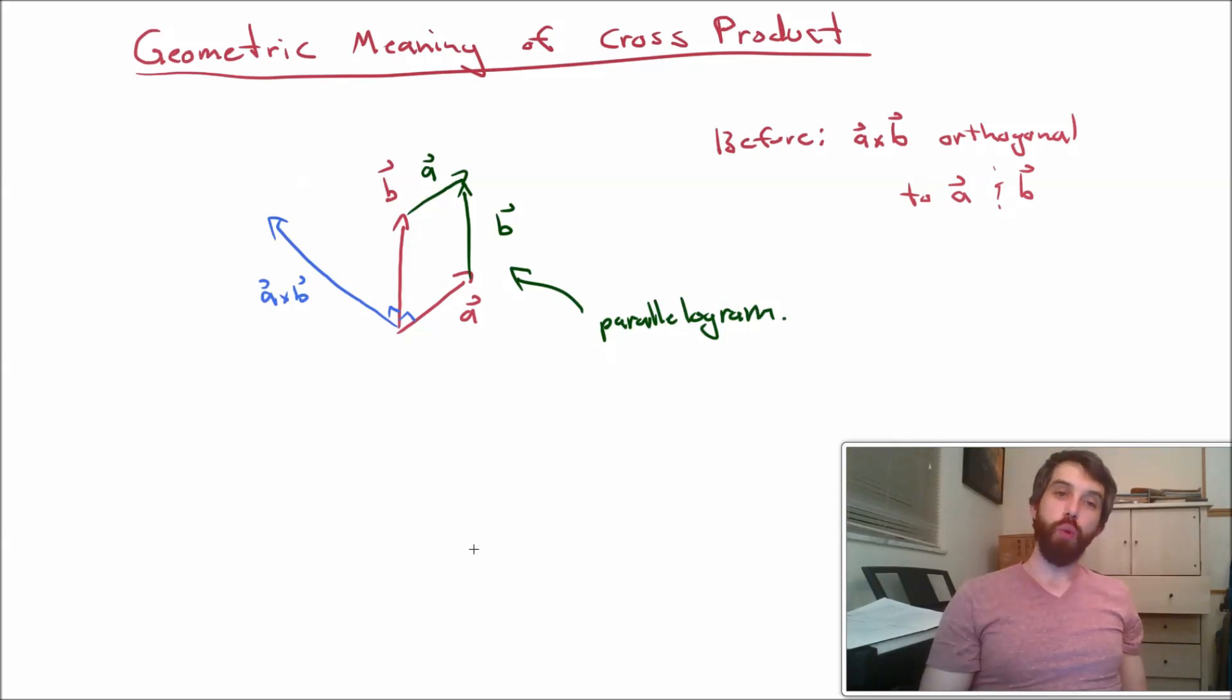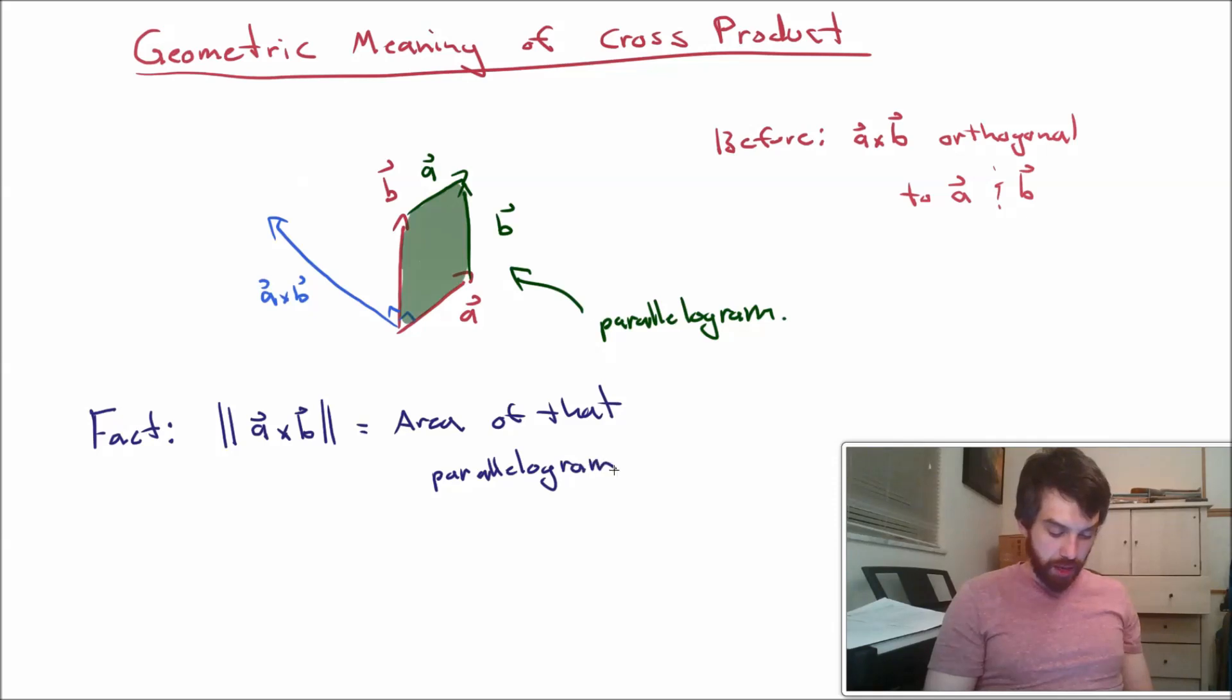So then we can ask the question, what is the area of the parallelogram? So the key property here is that if I take the length of the A cross B vector. In other words, I've got this vector and I take the square root of the sum of the squares of its components. That's what the length of the vector is. The length of this vector is equal to the area of that parallelogram.